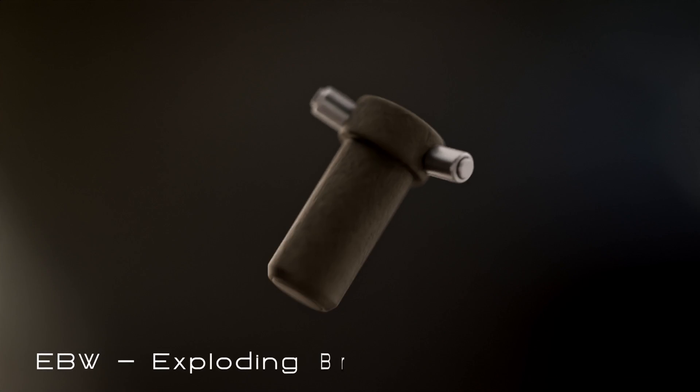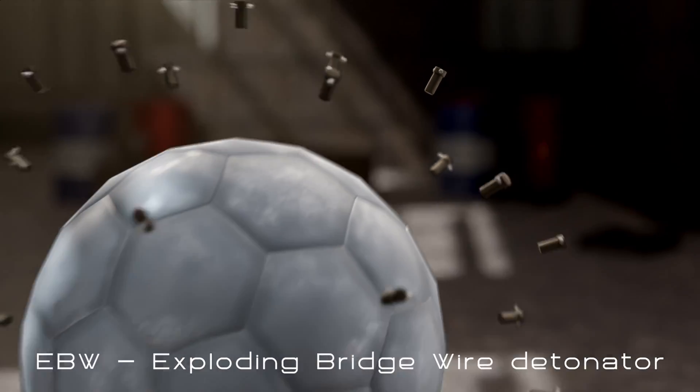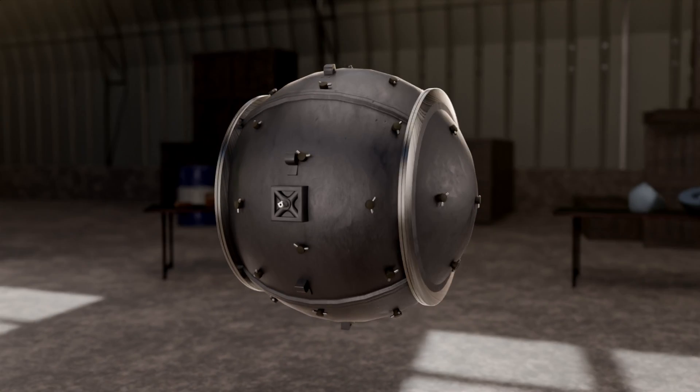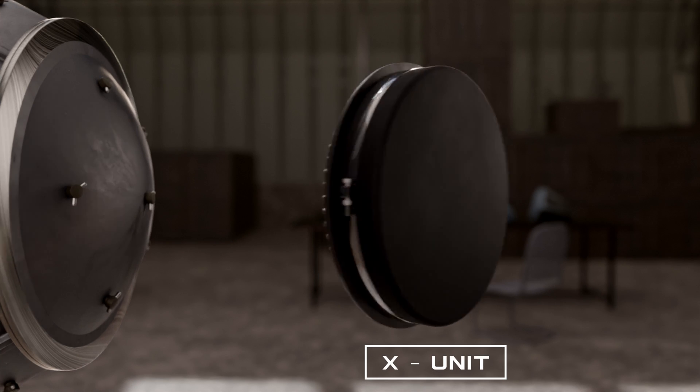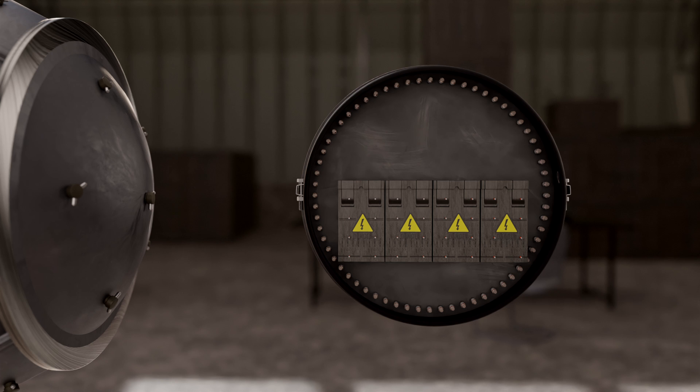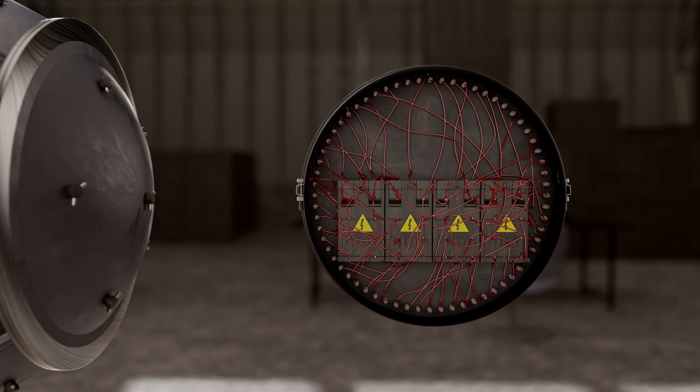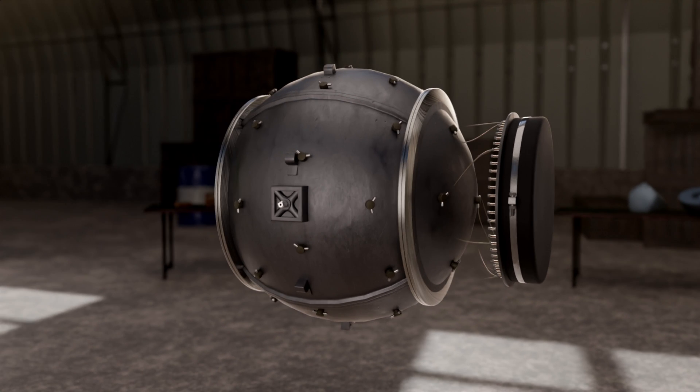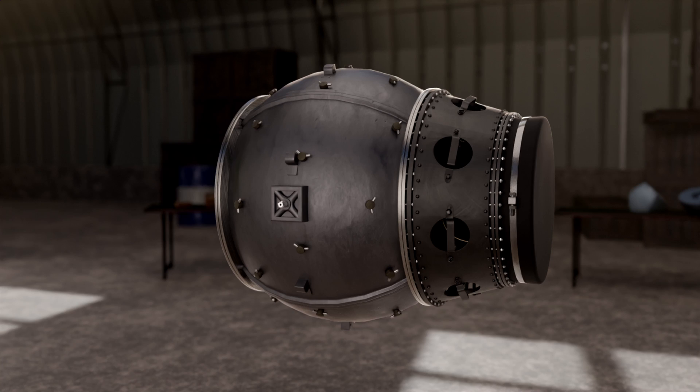An EBW, or exploding bridge wire detonator is placed in each block, and a duraluminum case covers this whole arrangement. Here comes the X unit. It provides high voltage current to the EBWs. It has high voltage batteries and capacitors. Wires are connected from these batteries to the 64 terminals. From these terminals, insulated wires are connected to the EBWs. A support structure connects the X unit to the duraluminum case.